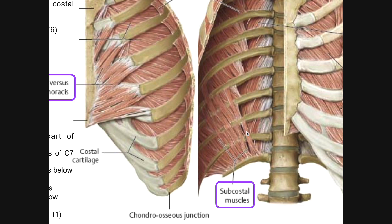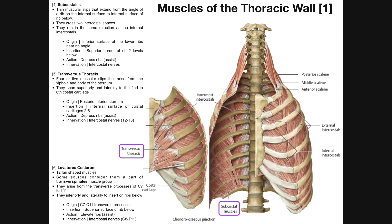We can see a bunch of subcostal muscles down here — there are a bunch of muscular slips. They cross two intercostal spaces, and as a result, their origin and insertion are going to be two ribs generally apart. The origin of the subcostal muscles is actually going to be the inferior surface of some of the lower ribs near the rib angle. The rib angle is the part of the rib closer to the posterior attachment on the vertebra.